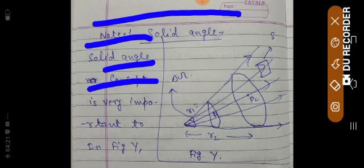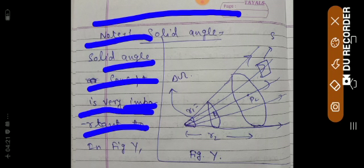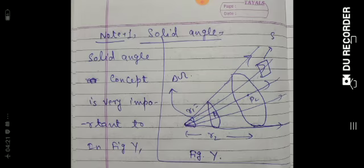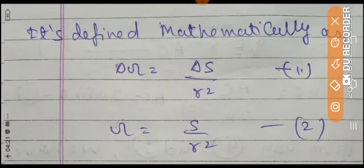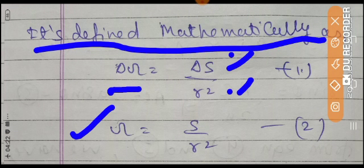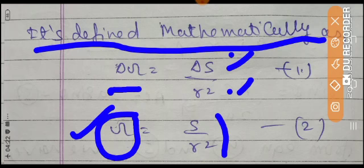In figure Y, there are two different areas B1 and B2, and small areas as well. To define the solid angle mathematically, it is area divided by radius squared. The solid angle ΔΩ = ΔS / r², and for the full solid angle, Ω = S / r². This is the mathematical definition of solid angle, which is present in NCERT and may be asked in higher classes.